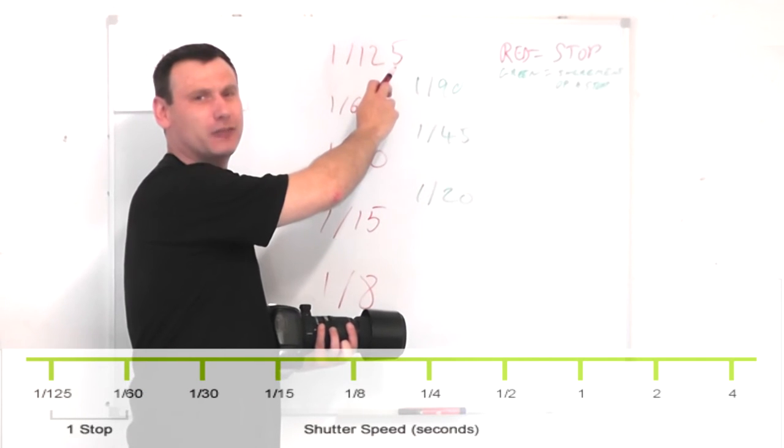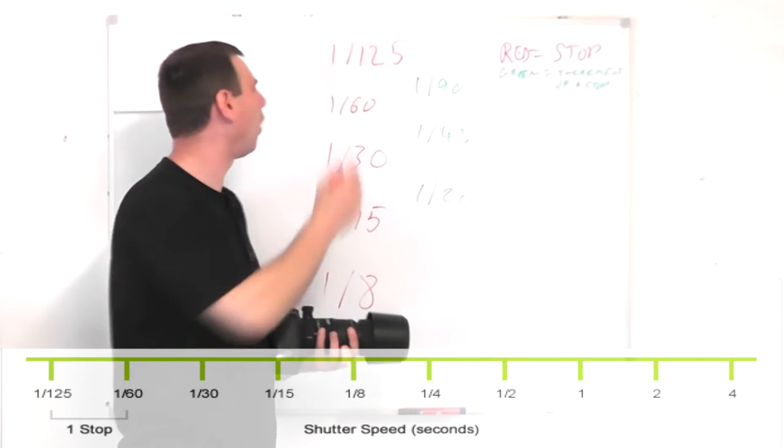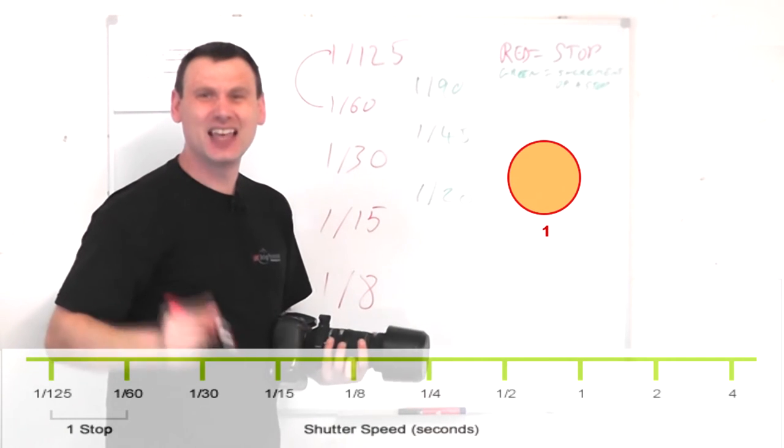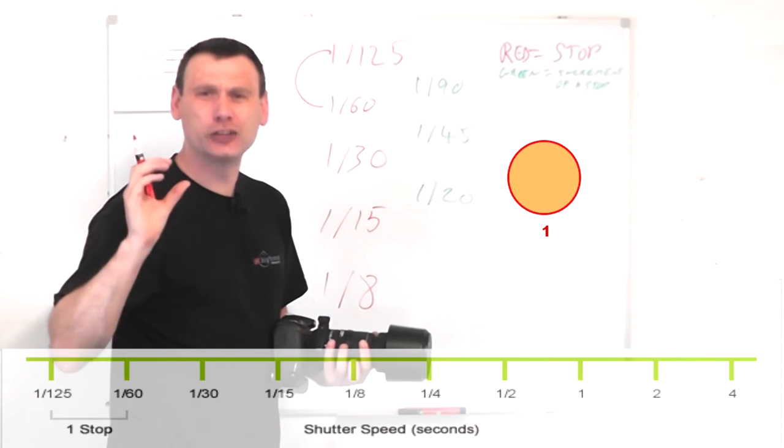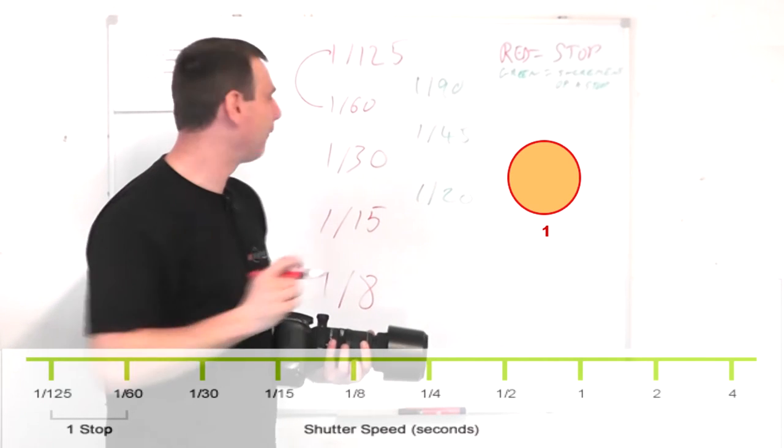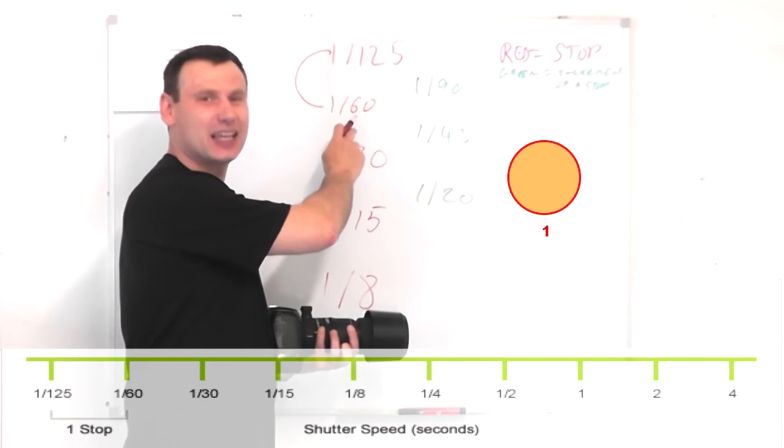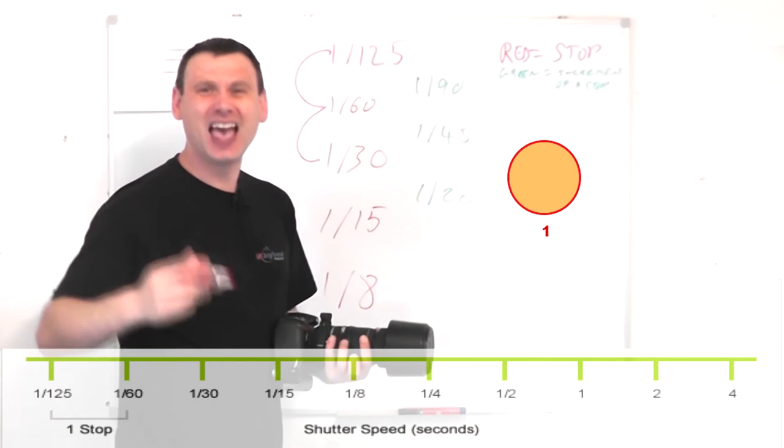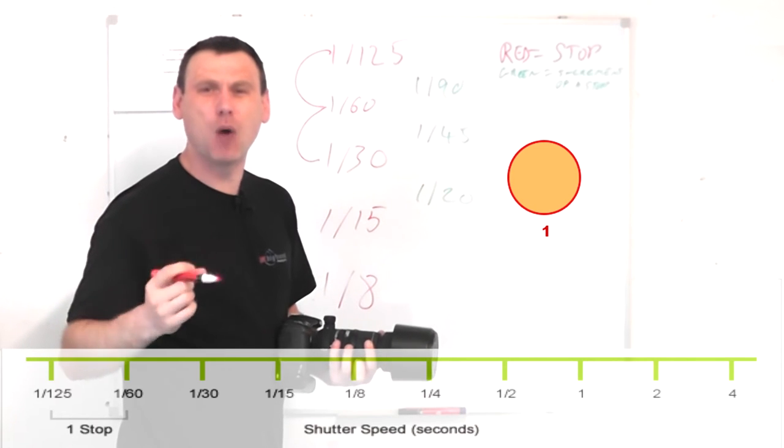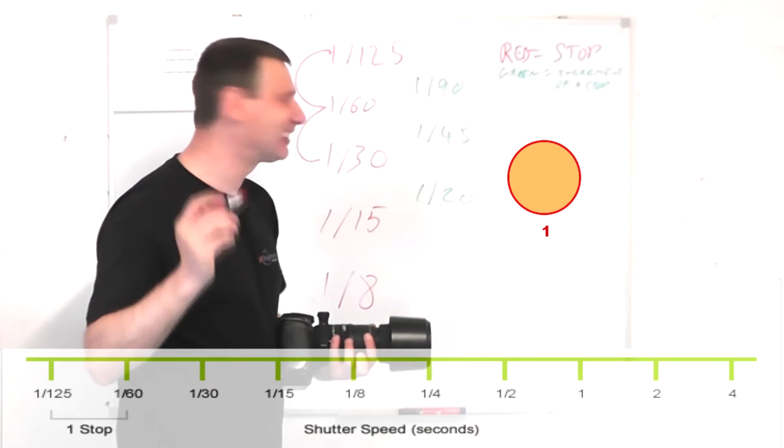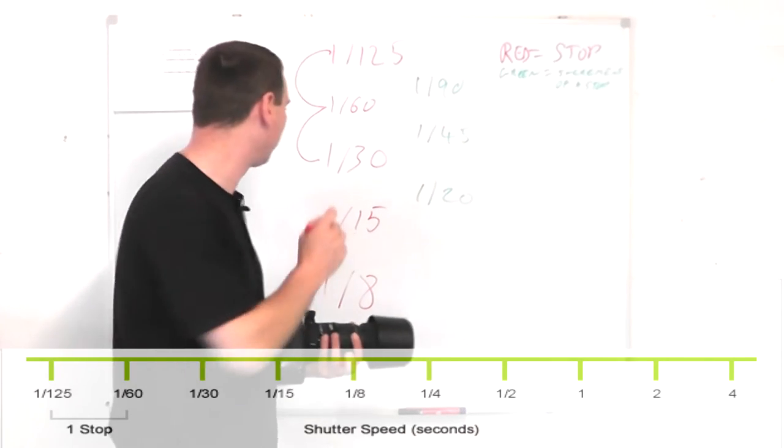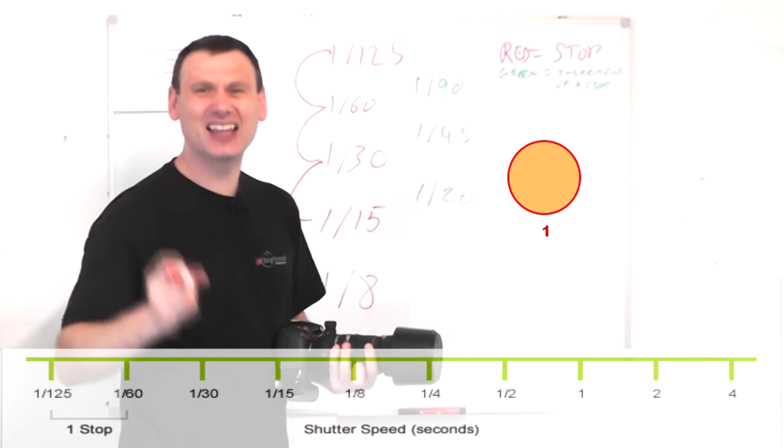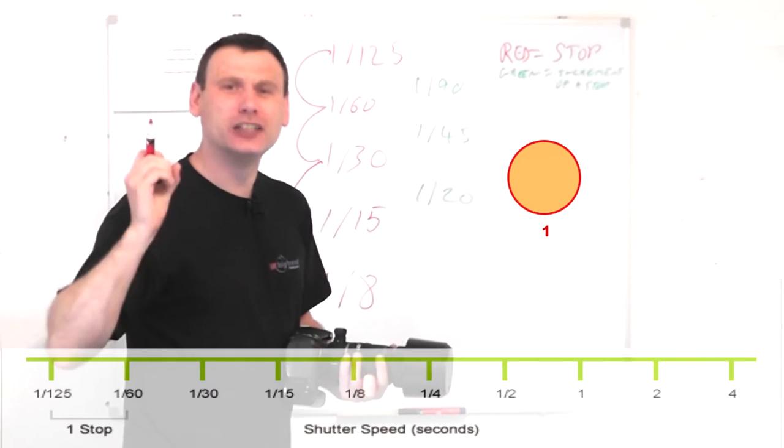So if we're at 1/125th of a second and if we opened up to 1/60th of a second, then we've opened up by a full stop. Then if we went from 1/60th of a second and opened up to 1/30th of a second, again we have opened up by a full stop. It's the same if we go from 1/30th of a second all the way to 1/15th of a second. Again that is a full stop.